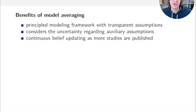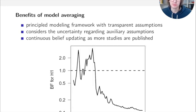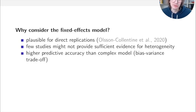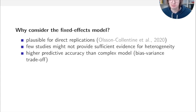The benefits of this approach are that it's principled and transparent — assumptions are explicit and we account for uncertainty in auxiliary assumptions. You can also do it sequentially, continuously updating beliefs as more studies are published. The fixed effects model could be criticized, but it's plausible for direct replications, and with few studies you may lack sufficient evidence for heterogeneity, making the fixed effects assumption better for predictive accuracy on the bias-variance trade-off.